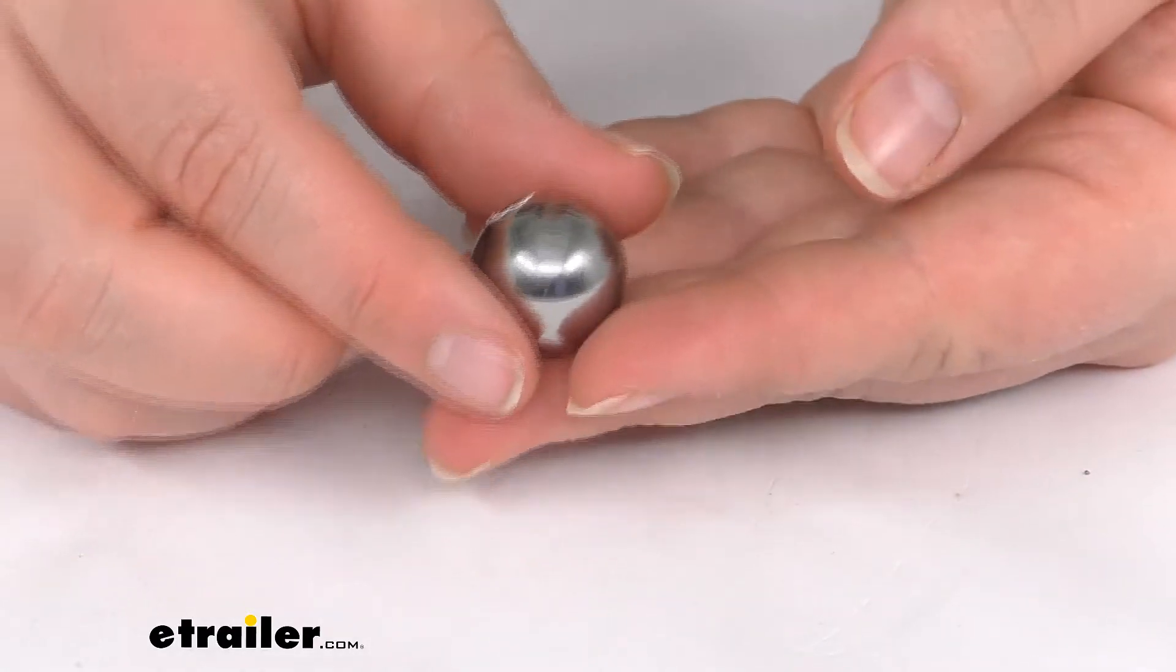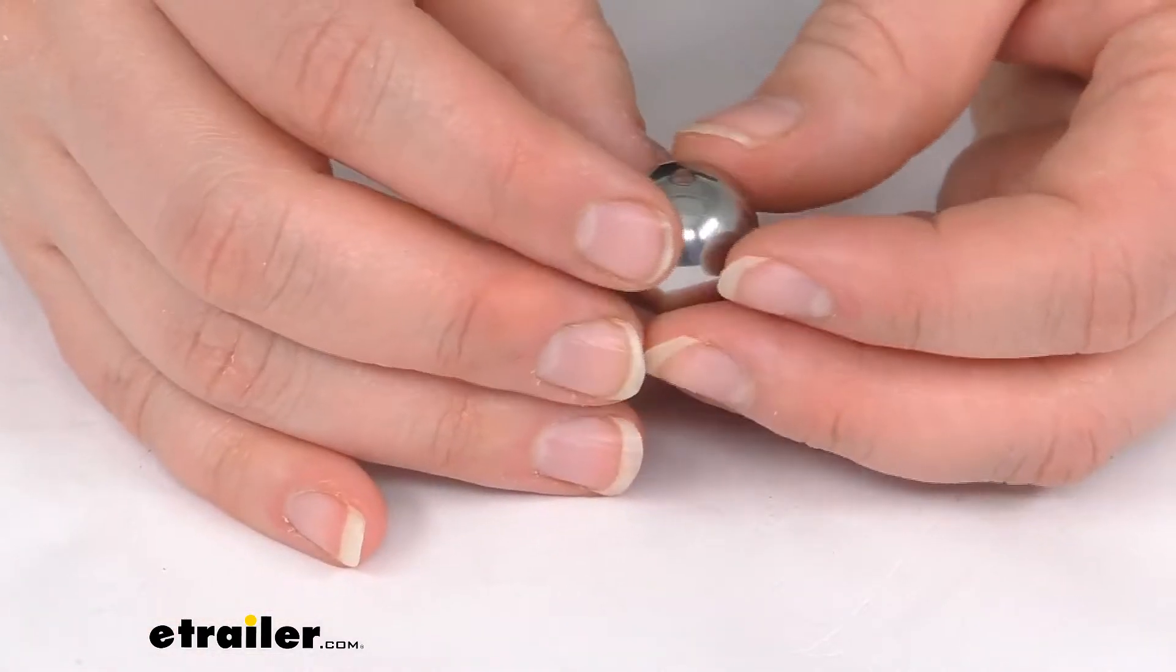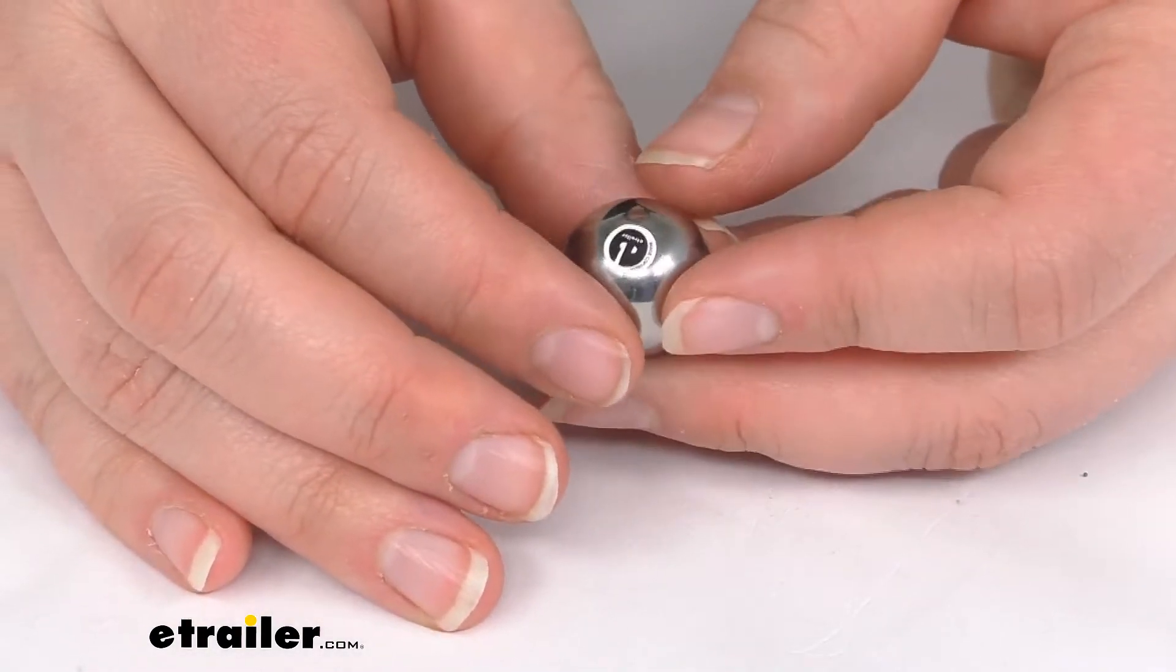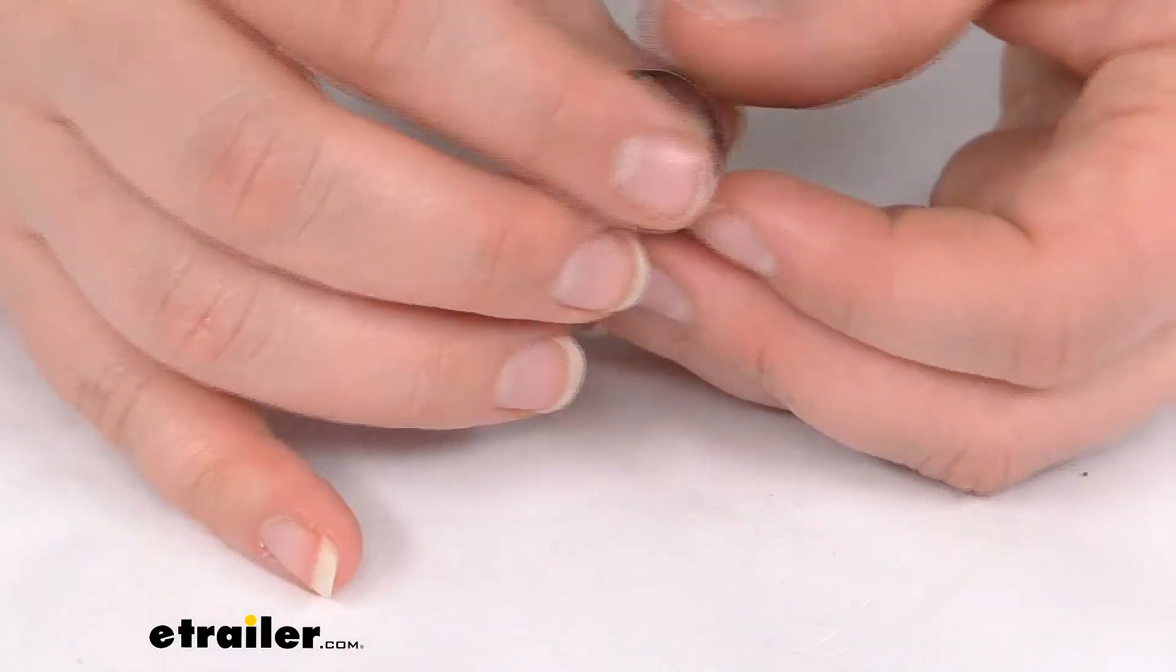And this is going to be the ball detent that goes around the collar that fits into that gooseneck connection. So this is what holds that collar in place and gives you the ability to tow with your trailer.